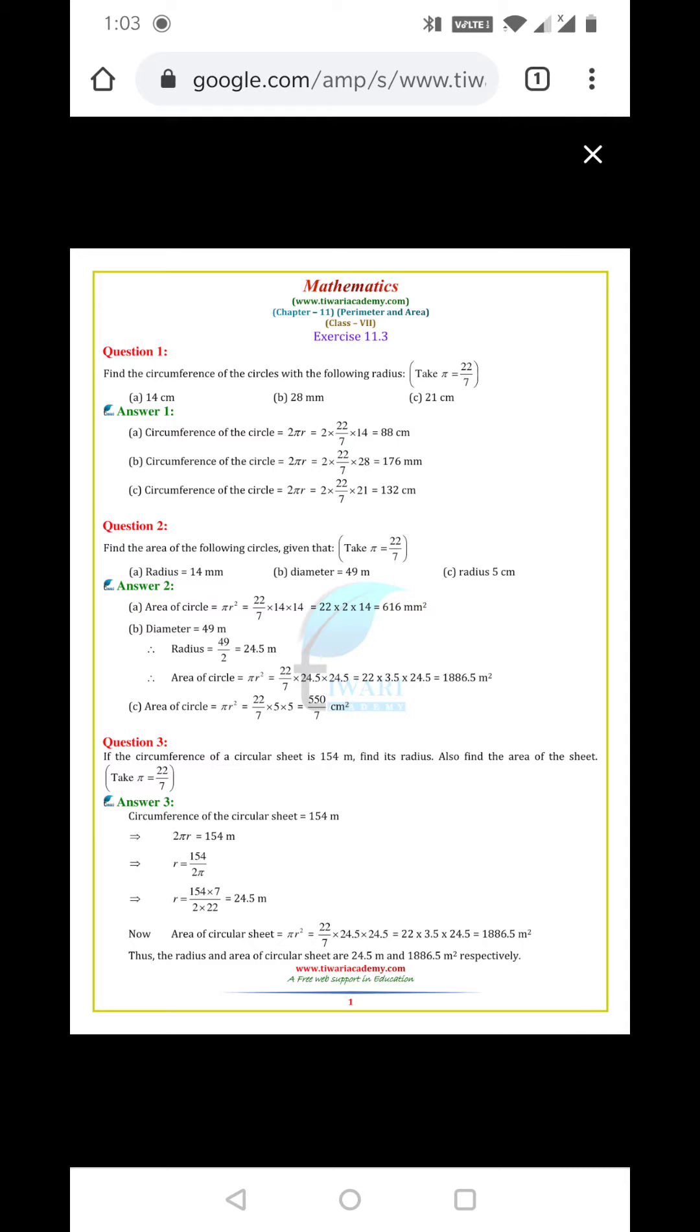Now we have the diameter. The diameter is 49 m. Now we know that diameter equals 2r, so we have the diameter and need to find the radius.